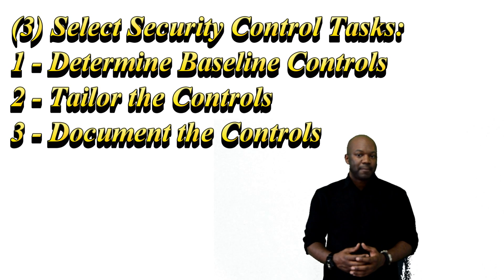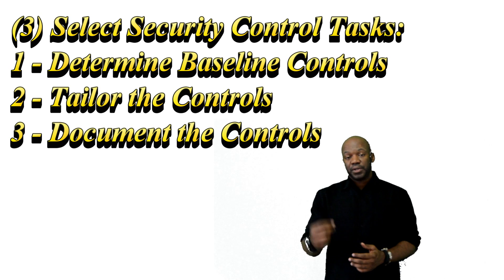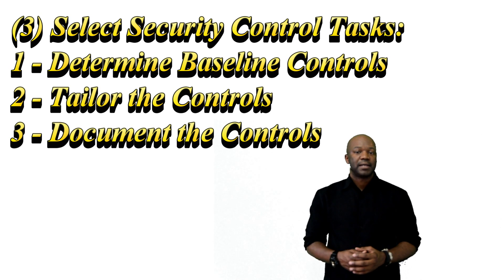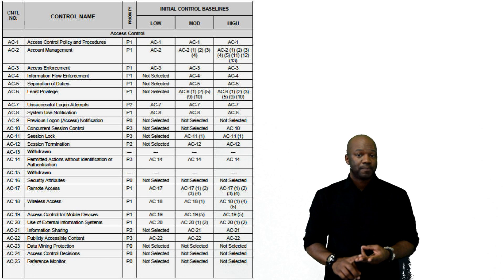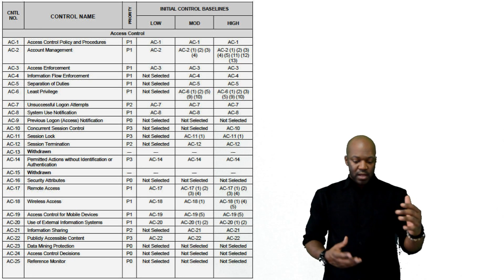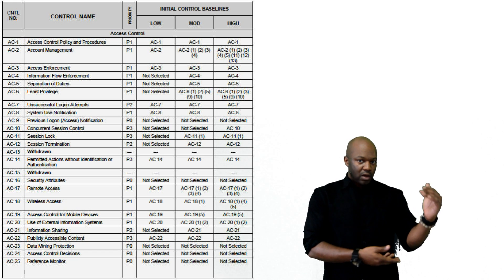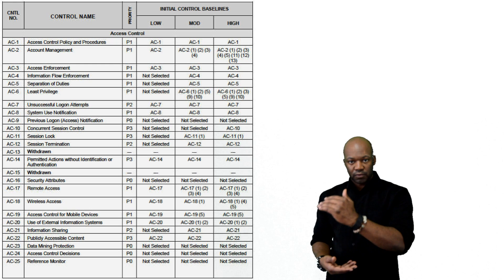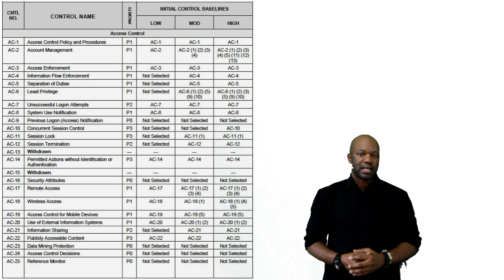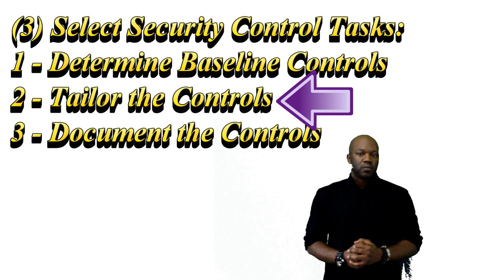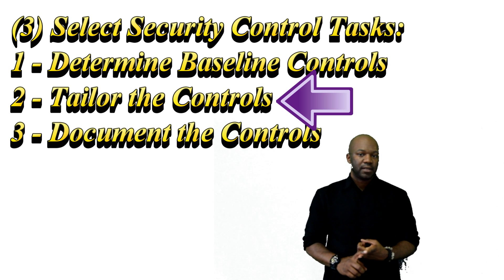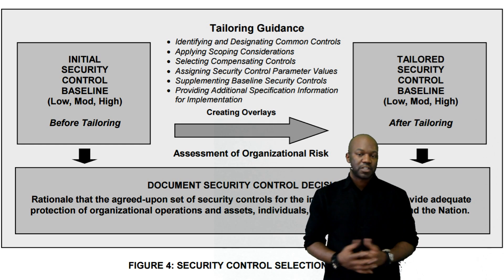How we determine which controls to use starts with the categorization of the controls. The security categorization gives us what's called a baseline. If you go to NIST SP 800-53, it will have a baseline for a low, moderate, or high system. Right out of the box, you'll know whether you need to implement the low, moderate, or high controls for that system. But you have to go a step further, because we also need to know what common controls, what system-specific controls, and which hybrid controls to implement.